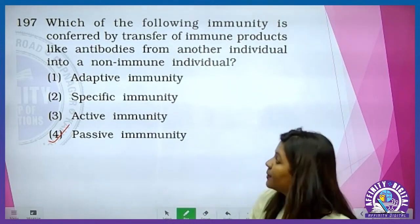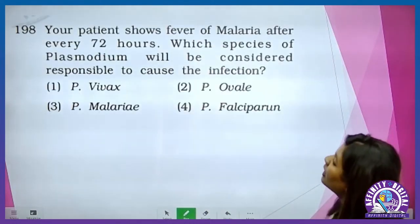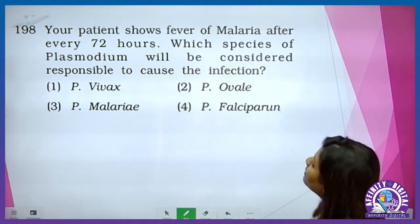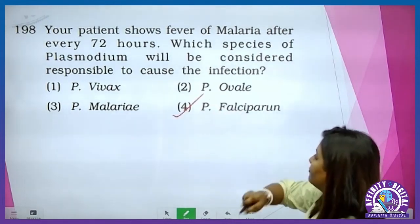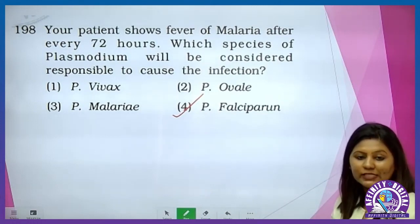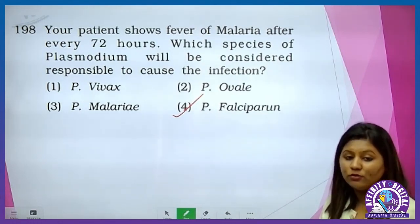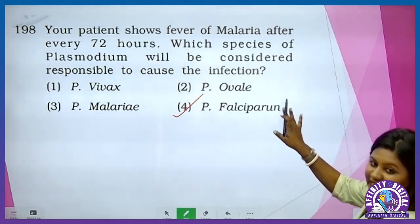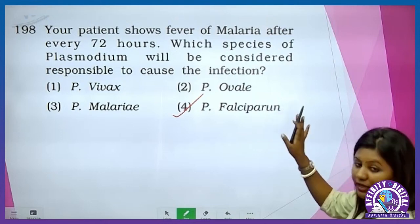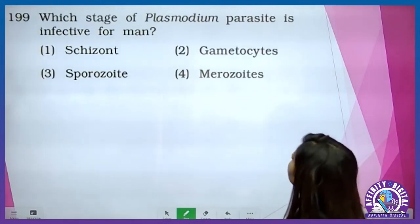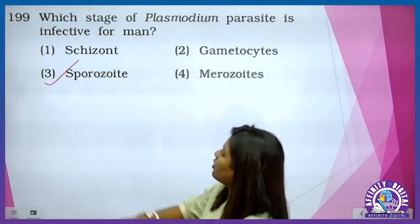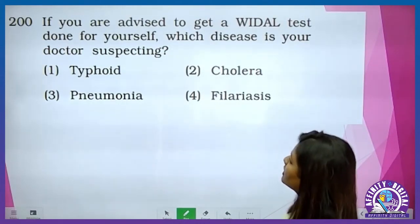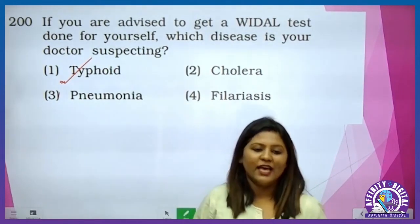A patient shows fever of malaria after every 72 hours — which species of Plasmodium is responsible? Fever recurrence at 72 hours — it is Plasmodium falciparum, the most malignant and most serious type of malaria. The infectious stage of Plasmodium for humans is the sporozoite. If you are advised to get a Widal test done, which disease is your doctor suspecting? Widal test stands for typhoid. And with this we end this session.